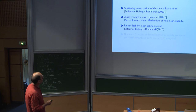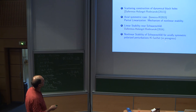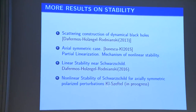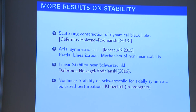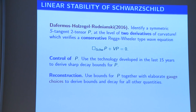Finally, there is work in progress by Seftel and myself on the nonlinear stability of Schwarzschild in the axially symmetric polarized case. The central point of the Dafermos-Holzegel-Rodnianski approach is a remarkable discovery of a new tensor P — an S-tangent 2-tensor at the level of two derivatives of curvature — which satisfies a conservative equation: a wave equation on Schwarzschild applied to P, plus a Regge-Wheeler potential times P, which has good energy estimates. You then apply all the technology developed in the last 15 years to control the boundedness and decay of P.